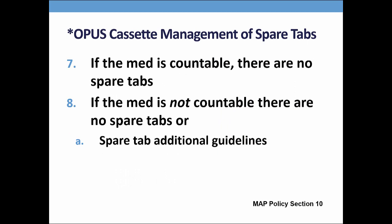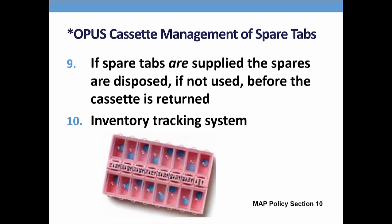If your program uses the Opus cassette packaging system, there shouldn't be any spare tablets included in the cassette if the med is a Schedule 2-5. If the medication is a non-countable, spare tabs are allowed with additional guidelines. If the med is non-countable, there are three options for managing spare tablets if they are included in the cassette. Option 1 is to ask the pharmacy not to include them. Option 2 is, prior to returning the cassette, dispose of the spare tabs following the disposal guidelines so that the cassettes are returned empty. Or Option 3, develop an inventory system of the spare tablets returned. This could be difficult if any of the plastic tabs covering the well of the cassette containing the spares are opaque. In the example on your screen, you are viewing a non-countable medication with spare tabs and all tabs are visible.